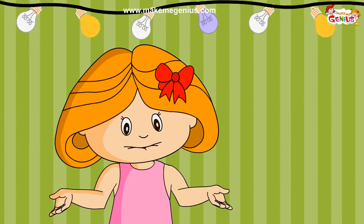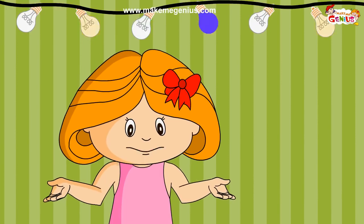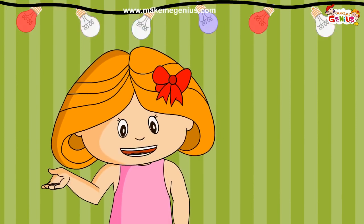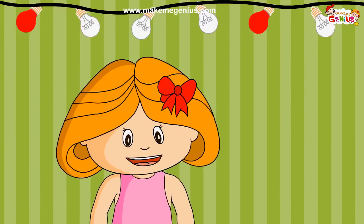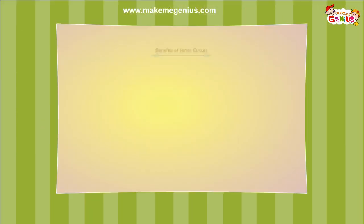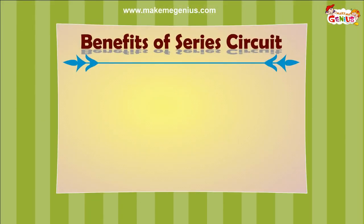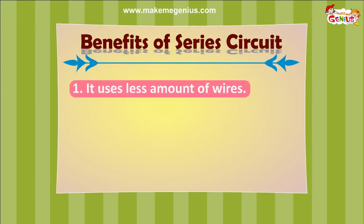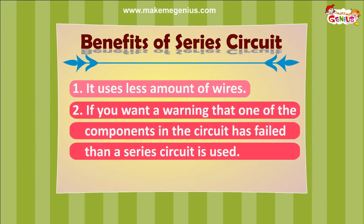There is another disadvantage: if you keep increasing the number of bulbs in this circuit, the light of each bulb will get dimmer than before. But there are two benefits. One, it uses less amount of wires. And the second advantage is that if you want a warning that one of the components in the circuit has failed, then the series circuit is used.